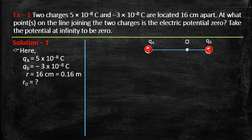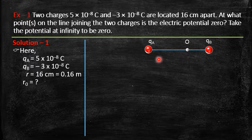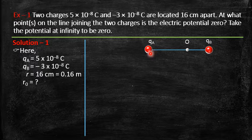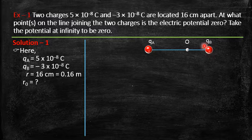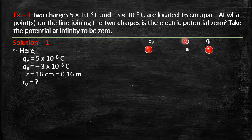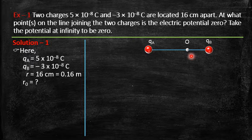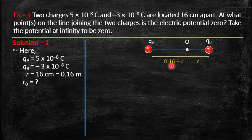We assume a point O between A and B where potential is zero. Since q_A is positive, potential at O due to q_A is kq/distance, which is positive. Potential due to q_B is also kq/distance but negative, since q_B is negative. So the sum of potentials at O can be zero. We assume O is at distance r from charge B, so the distance from A to O is 0.16 − r.